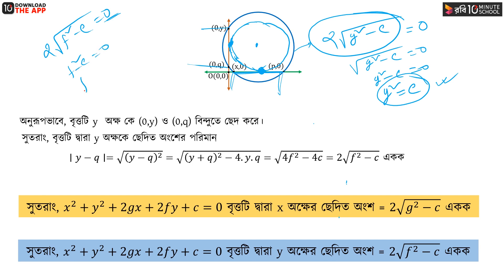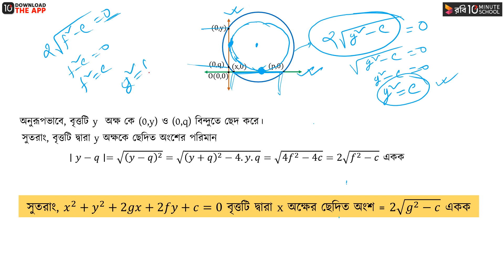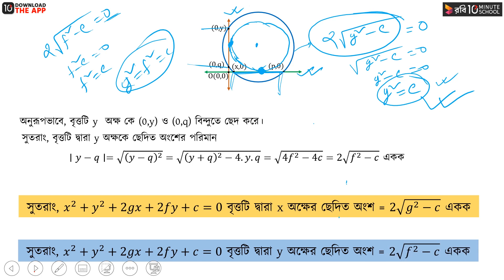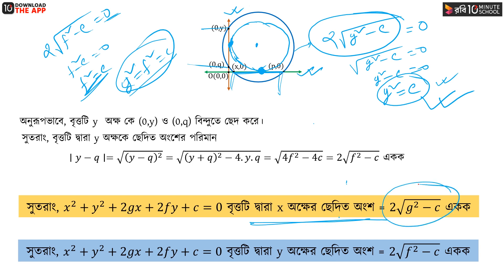So the tangency conditions are: f squared equals c for the circle to touch the y-axis, and g squared equals c for the circle to touch the x-axis. When these hold, the intercept length formula 2 root over g squared minus c gives zero, confirming a tangent condition.